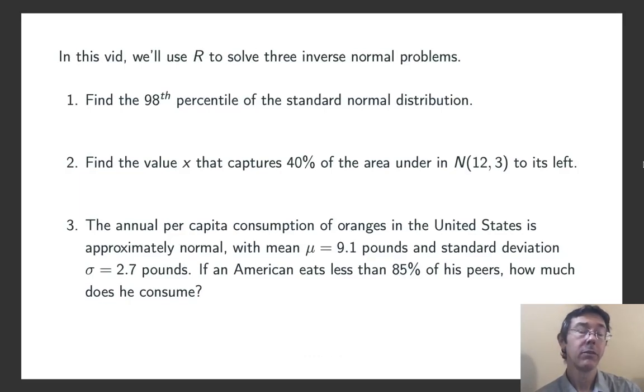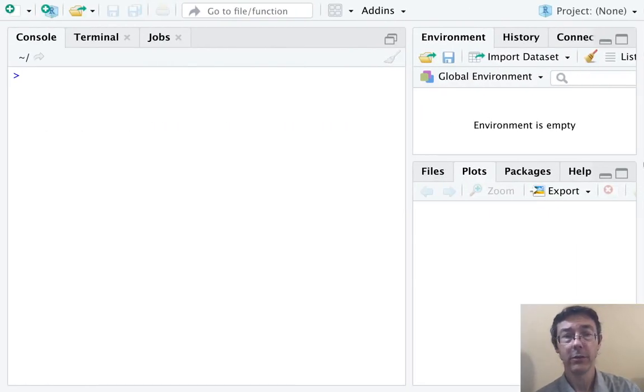The first of them is to find the 98th percentile of the standard normal distribution. That is, we want to find the z-score that lies above 98% of the probability in the standard normal distribution. So, let's head over to R.